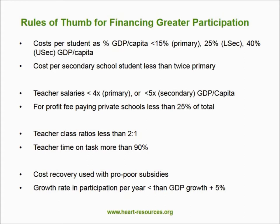Wherever possible, cost recovery options should be used but coupled with pro-poor subsidies. Secondary school systems generally are regressive — they are inhabited by children from upper quintile households more than lower quintile households. It is appropriate where possible to operate various kinds of means-tested fee structures, payment structures which encourage those who can afford to pay to make a contribution.